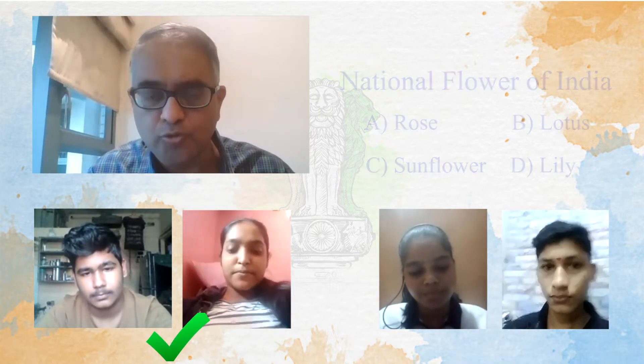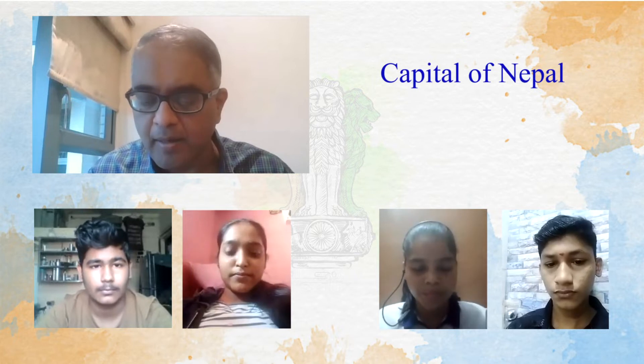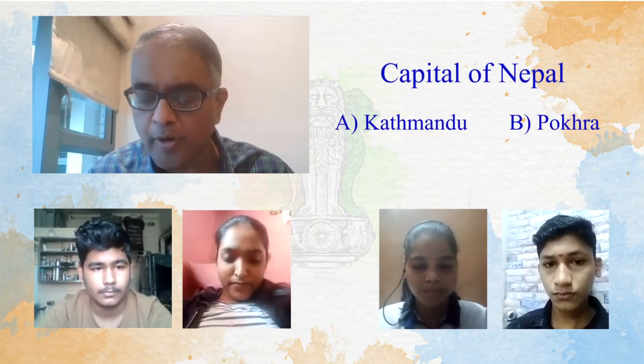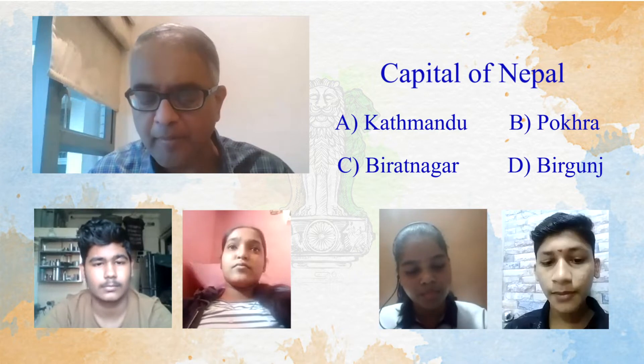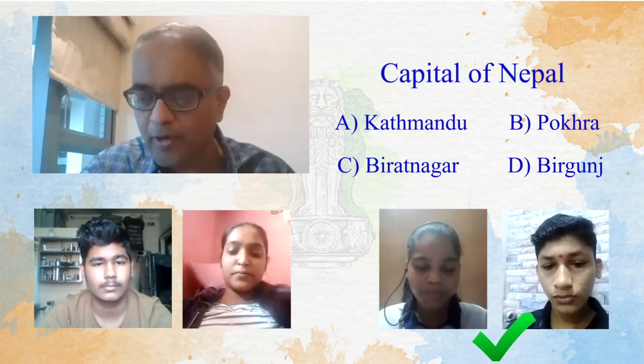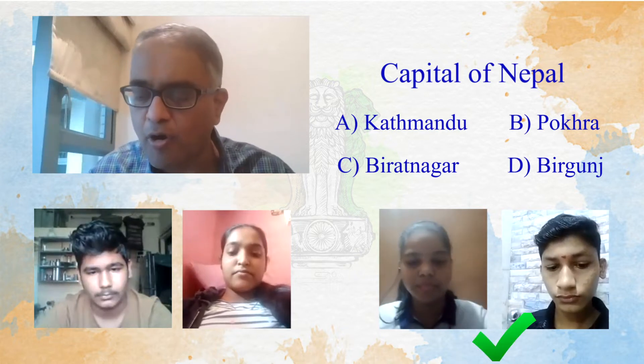The next question goes to team Swadesh, Sneha and Nishant. Capital of Nepal — Kathmandu, Pokhra, Biratnagar or Birgunj? The answer: Kathmandu. Oh, very good. So in this GK round, all of you got all the points — 20 points each for team Swaraj and team Swadesh. Well done.